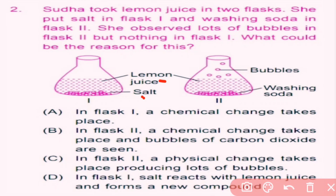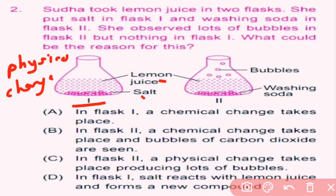In flask one, salt is dissolved in lemon juice, so there is no chemical reaction — it is a physical change. In flask two, she took lemon juice and washing soda. Lemon juice is acidic in nature and washing soda is a base, so lemon juice reacts with washing soda and bubbles of carbon dioxide are released.